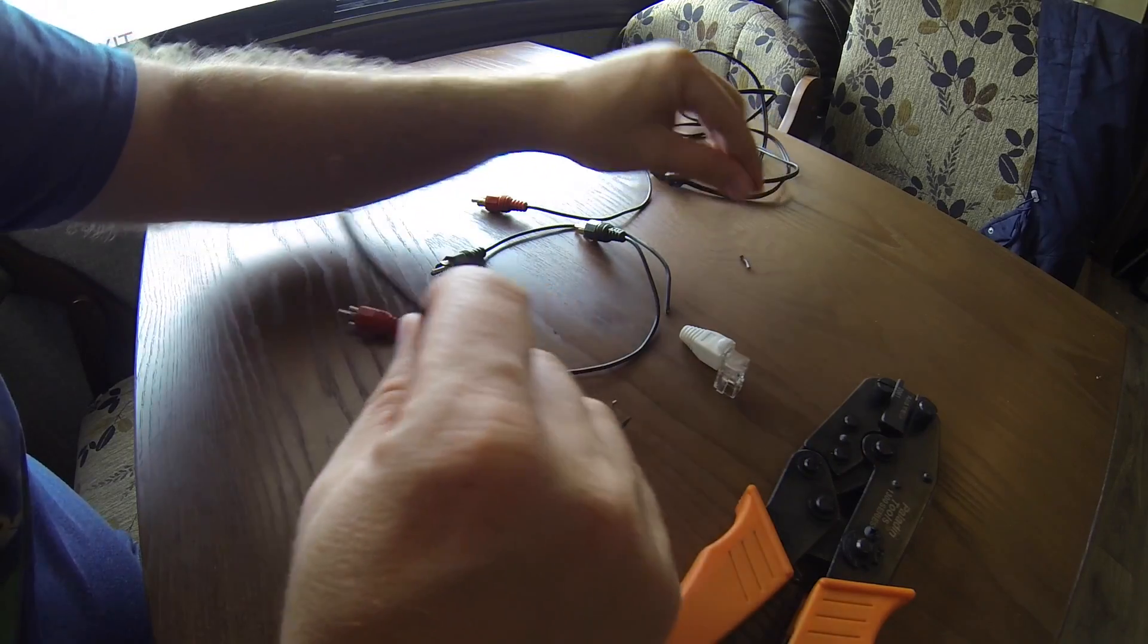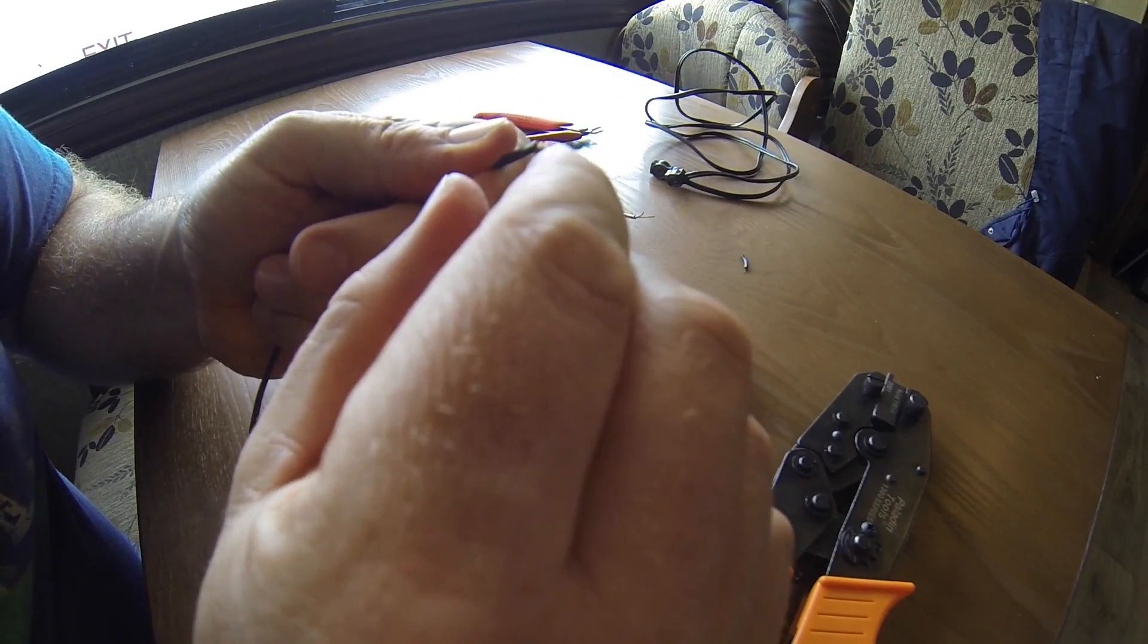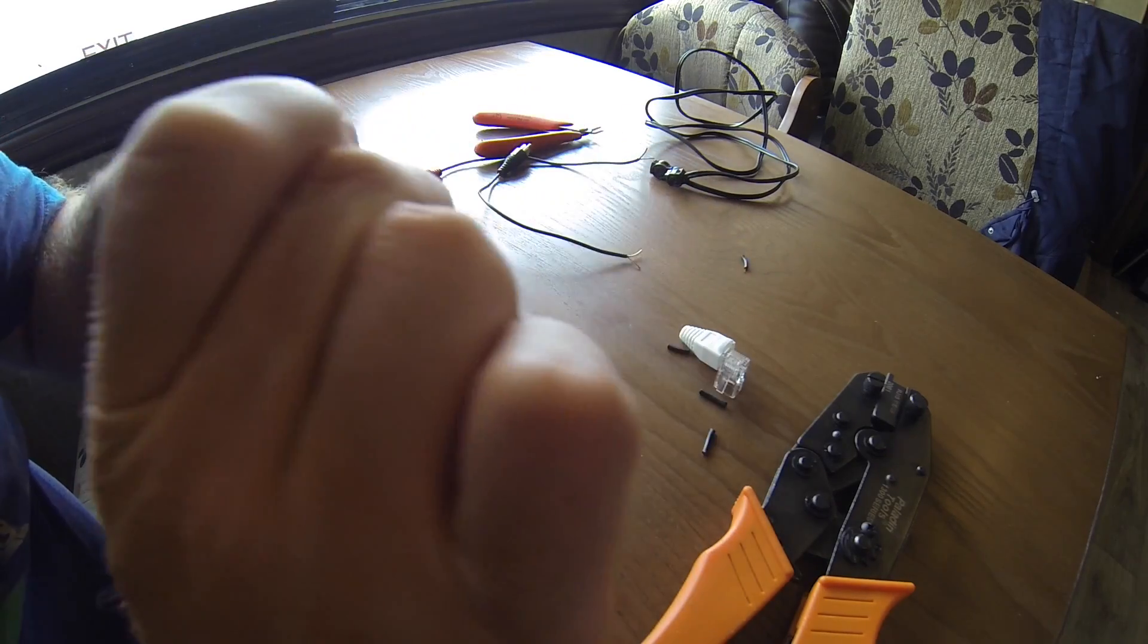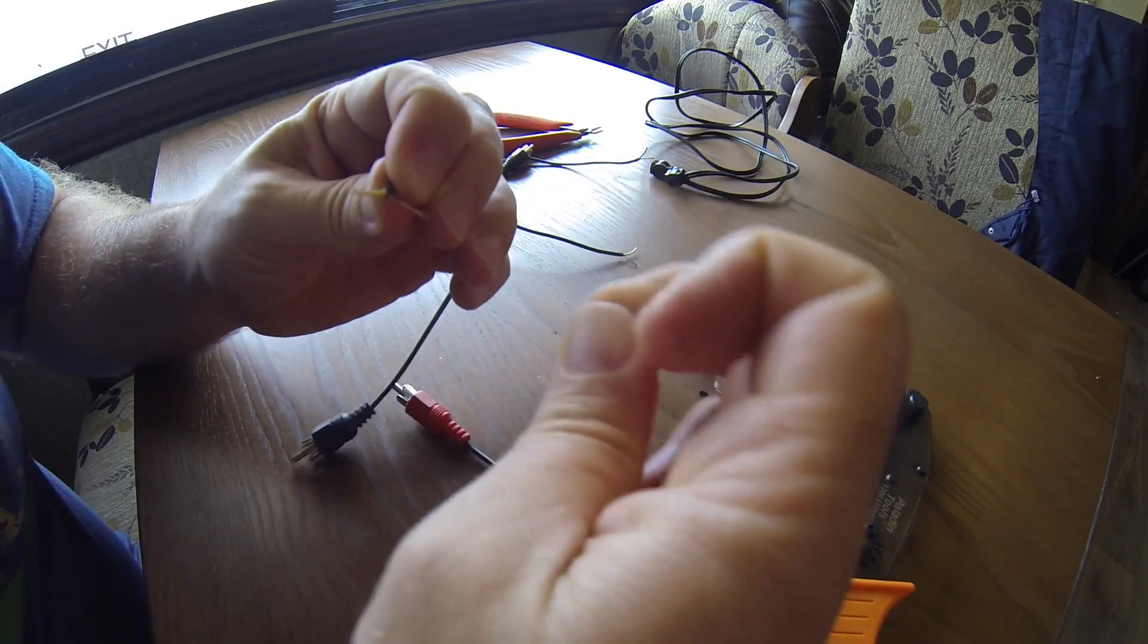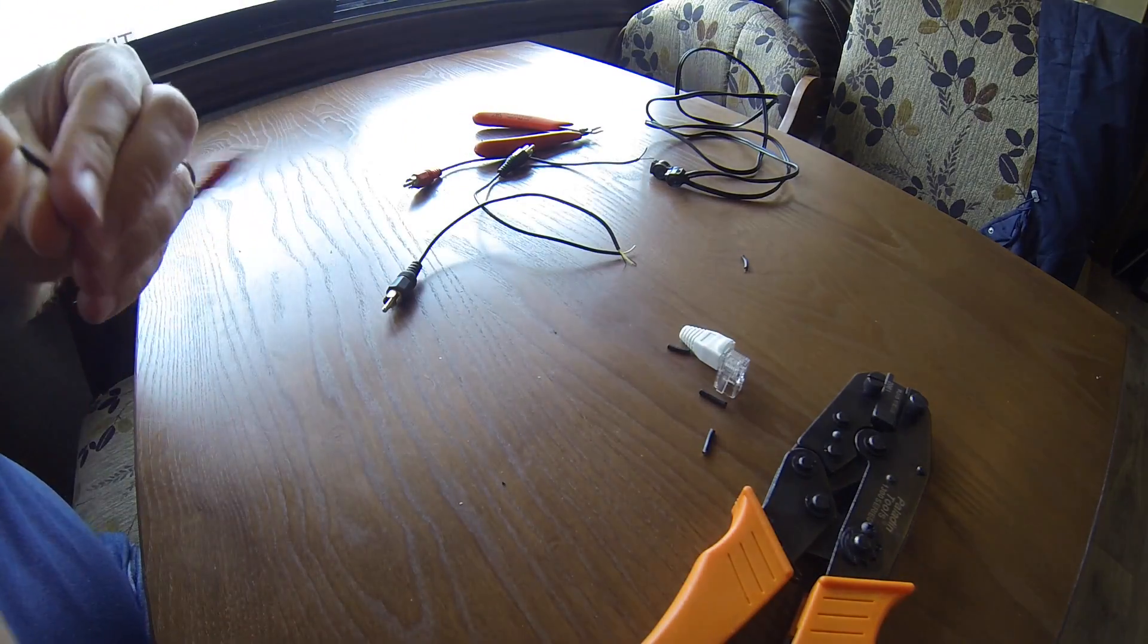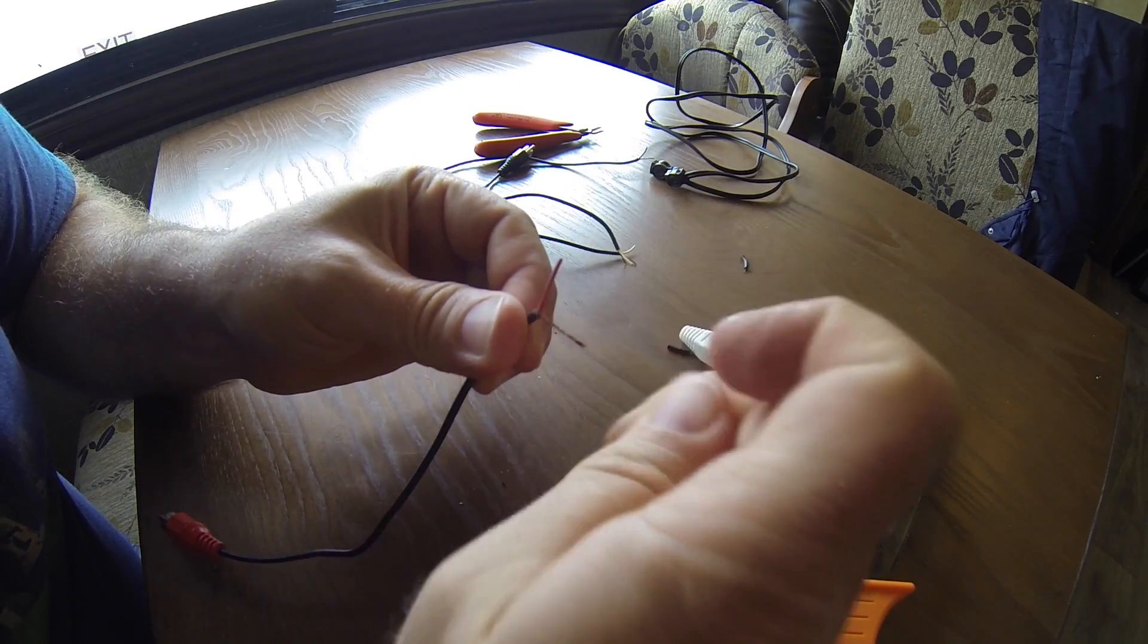We're going to do this four times to get all four of these. We're going to have four channels over one UTP. I'm just going to take this shield wire and twist it around. Getting that as rigid as possible is kind of critical for this to work.